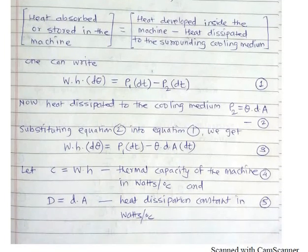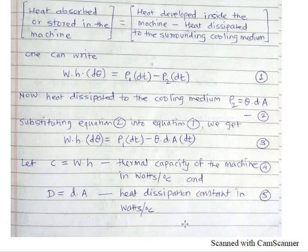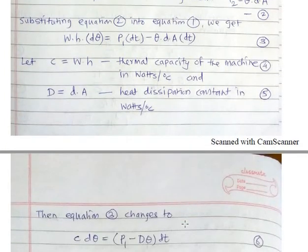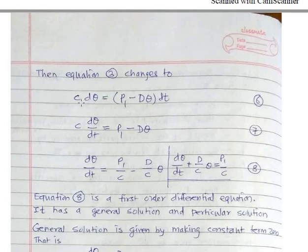The heat dissipated to the cooling medium, that is P2, is represented by theta into D into A. Substituting this equation 2 into equation 1, we get W·H·D theta equals P1·DT minus theta·D·A·DT. Now let us define C, which is the product of W and H, termed as thermal capacity of the machine in watts per degree Celsius. And D is the product of small d and A, that is the heat dissipation constant in watts per degree Celsius. Using C and D, equation number 3 becomes C·D theta equals P1 minus D·theta, whole multiplied by DT.